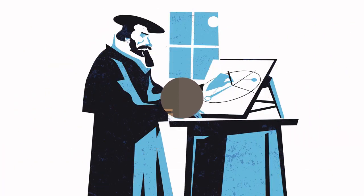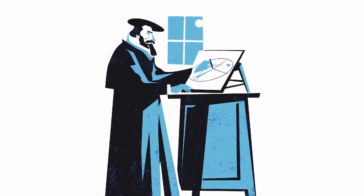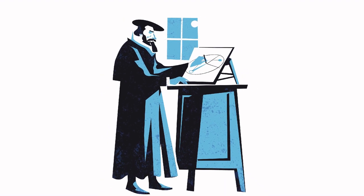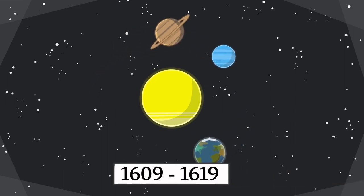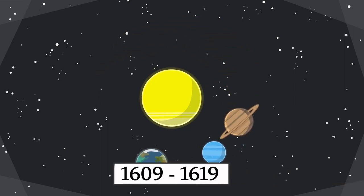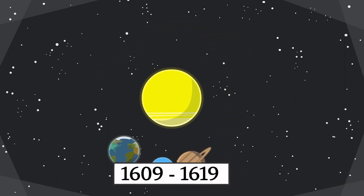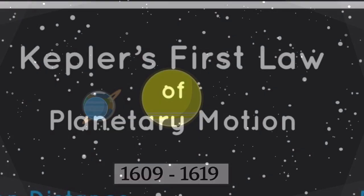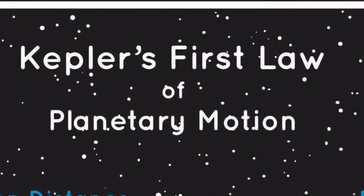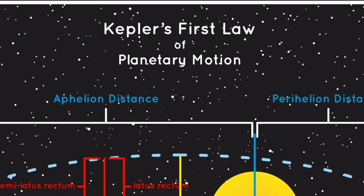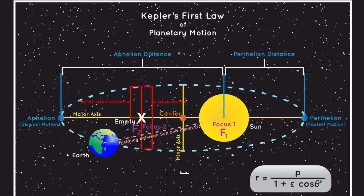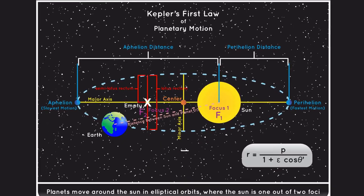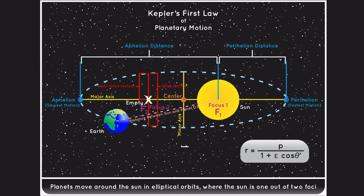Kepler is best known for his three laws of planetary motion, collectively known as Kepler's laws. These laws, published between 1609 and 1619, provided a mathematical description of the motion of planets around the Sun. Kepler's first law, the Law of Elliptical Orbits, states that planets move in elliptical paths around the Sun, with the Sun located at one of the foci of the ellipse.